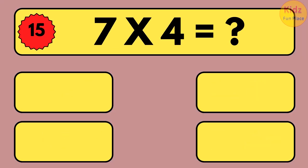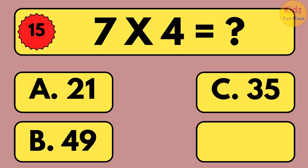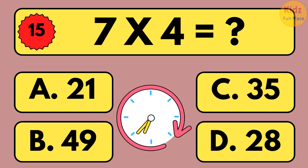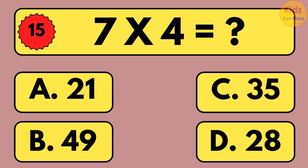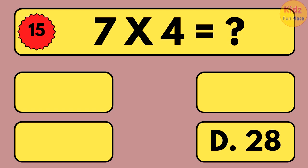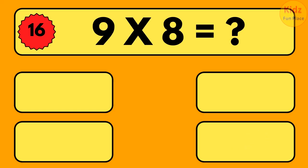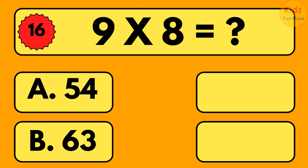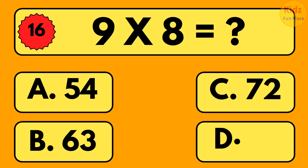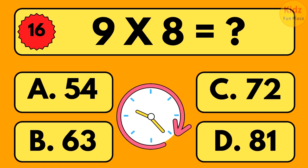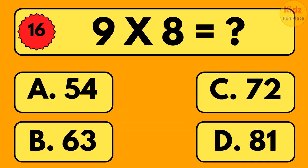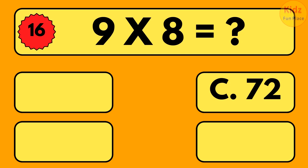7 times 4 is equal to what? 7 times 4 is equal to 28. 9 times 8 is equal to what? 9 times 8 is equal to 72.